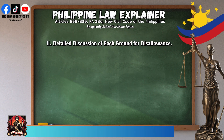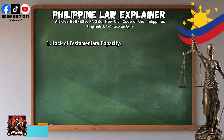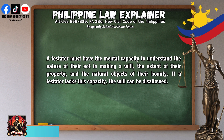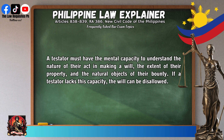Detailed discussion of each ground for disallowance. First, lack of testamentary capacity: a testator must have the mental capacity to understand the nature of their act in making a will, the extent of their property, and the natural objects of their bounty. If a testator lacks this capacity, the will can be disallowed.